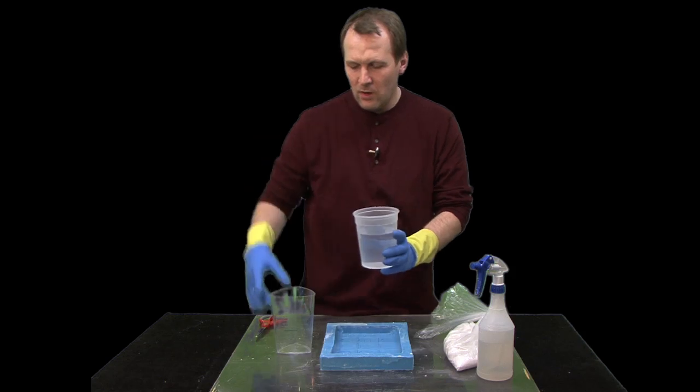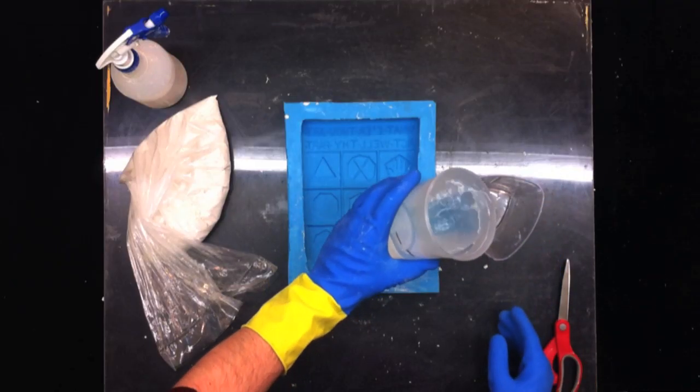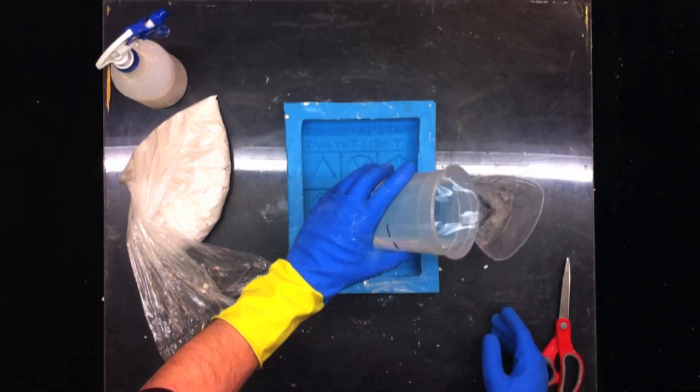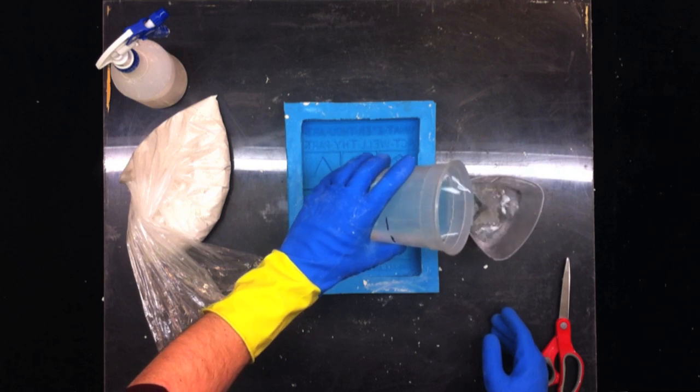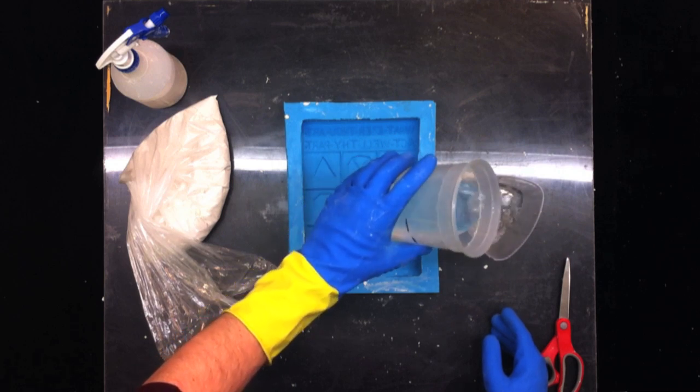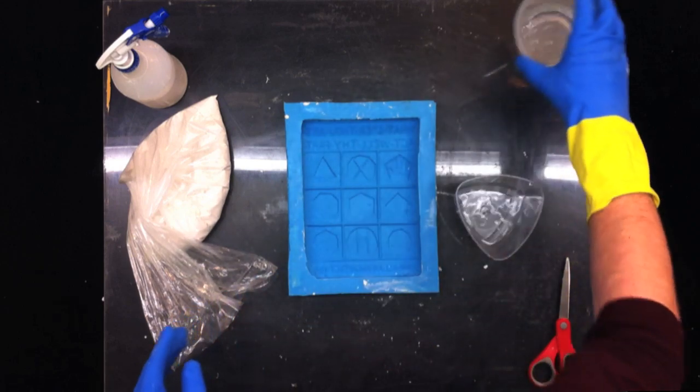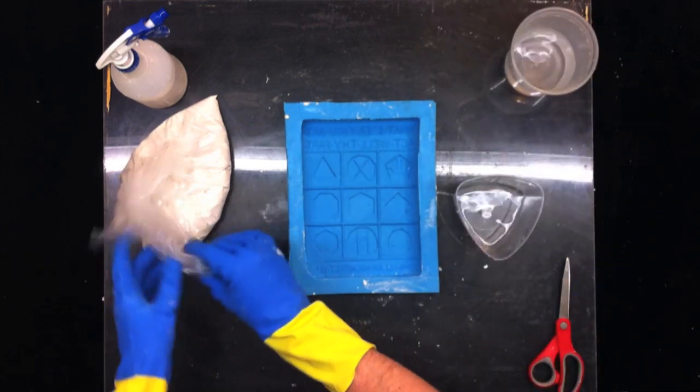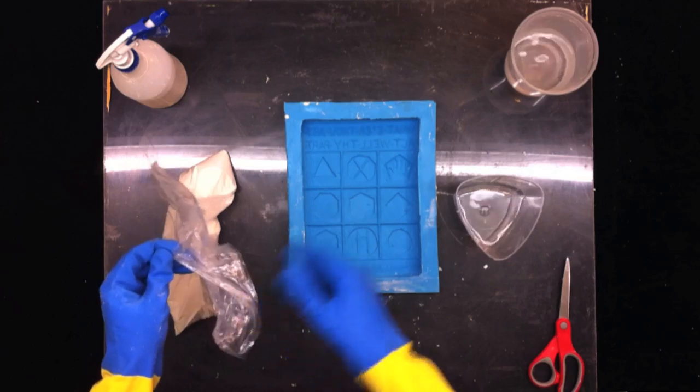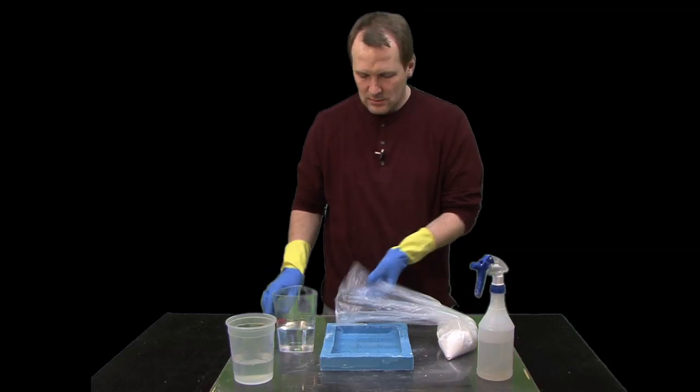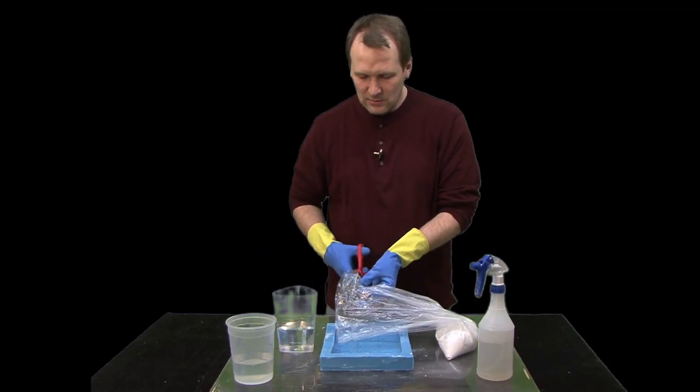Okay, so the first thing you want to do is measure out the water, so it's easier to do this rather than pour from the tap because you can be a lot more precise in how much water you're going to add. Okay, so we have it there.